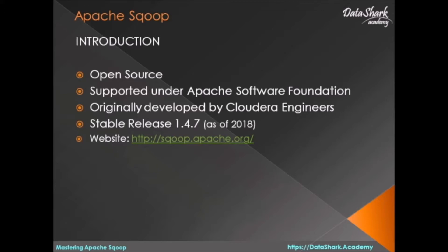Apache Scoop is a software framework to migrate data from relational database to Hadoop systems and vice versa. It is an open source software which is supported under Apache Software Foundation.